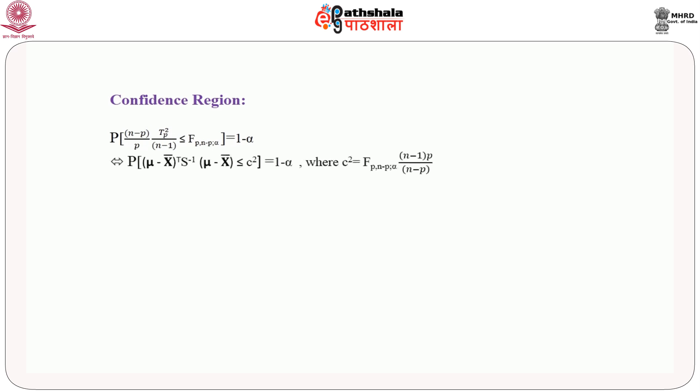The confidence region is given by the acceptance region of the test based on the Hotelling T-squared test. On inverting the acceptance region, we obtain the confidence region as: (mu - x̄)ᵀ S⁻¹ (mu - x̄) ≤ c², where c² is given as above. This is the confidence region of the population mean vector mu.